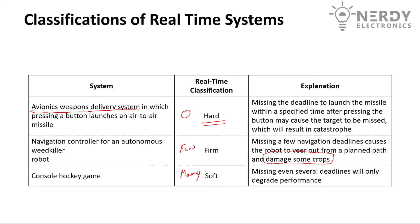So to summarize: hard real-time systems allow zero misses, firm real-time systems allow a few misses, and soft real-time systems allow many misses. That is how real-time systems are classified. In the next videos we'll see different terms associated with real-time systems — for example, period, execution time, deadline, etc. — and then we'll move on to various algorithms used in real-time systems. Thank you for watching.